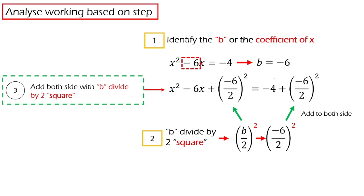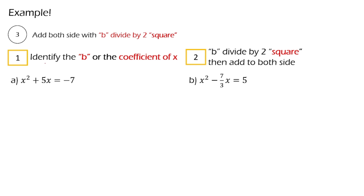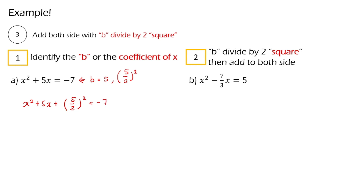Let's try some examples. The first question is x² + 5x = negative 7. The first step is we identify B. In our case, B is 5. What we do next is compute (5 divided by 2) squared, and then add it to both sides: x² + 5x + (5/2)² = negative 7 + (5/2)².